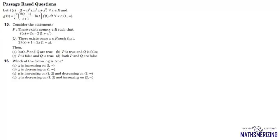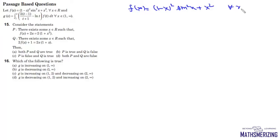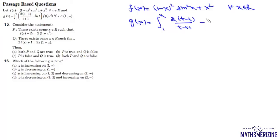The question gives us a function f(x) which is (1 minus x) whole square into sin squared x plus x squared, for all x belonging to R. We are also given a function g(x) defined as an integral from 1 to x of (t minus 1 upon t plus 1 minus log t) into f(t) dt.